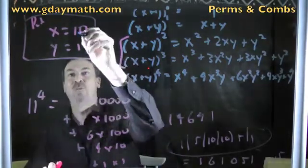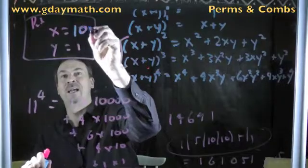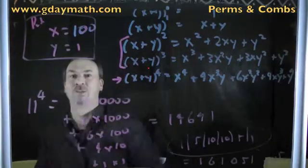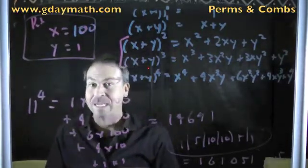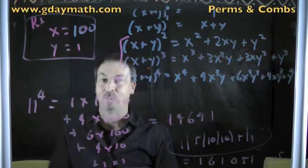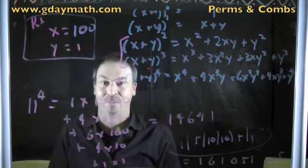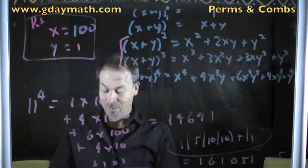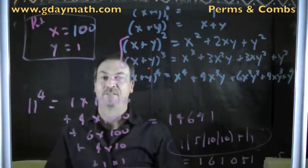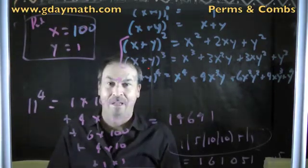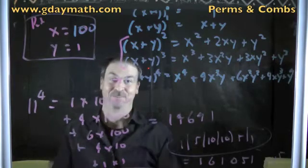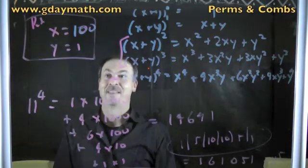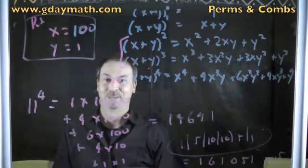In fact, I invite you to put in x equals 100 and y equals 1 — you'll find that the powers of 101 are intimately connected with Pascal's triangle. Look at 101 to the 4th power, 101 to the 5th power on a calculator, and so on, and then explain what you're seeing using this theorem. This is absolutely lovely stuff.